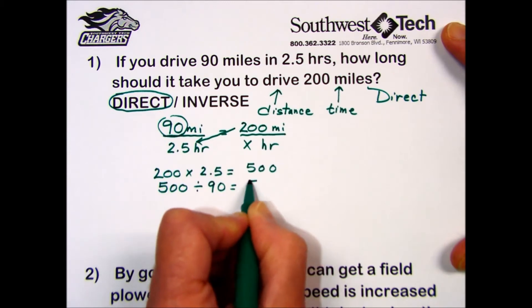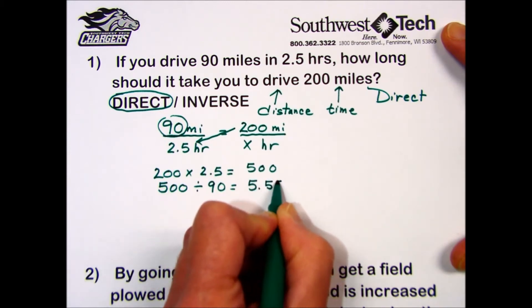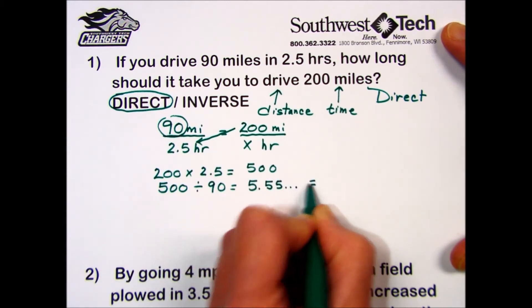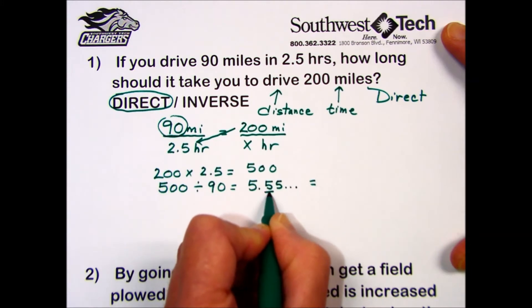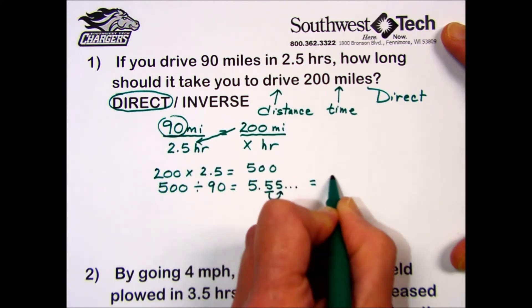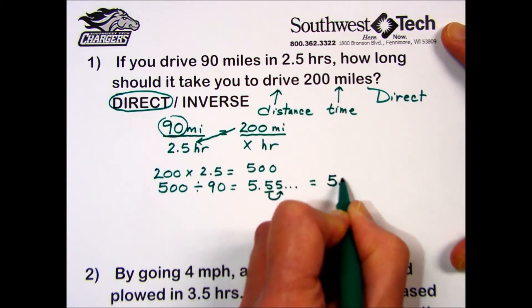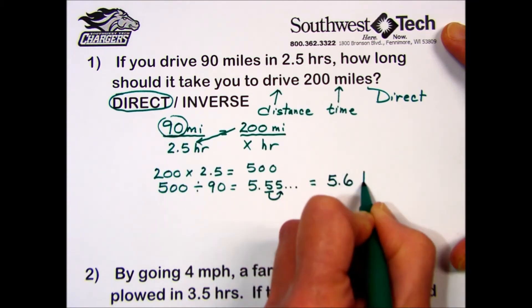Take that result and divide it by the value in the other diagonal to give us the missing component. 500 divided by 90 results in 5.55 repeating. Rounding this to the nearest tenth, we'll look at the hundredths place, 5 or greater, will result in an answer of approximately 5.6 hours.